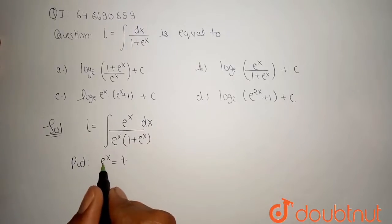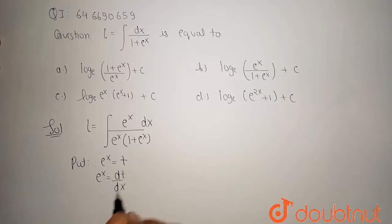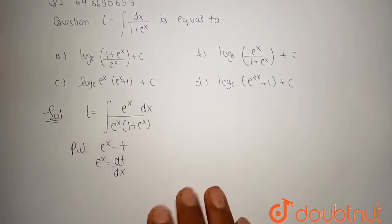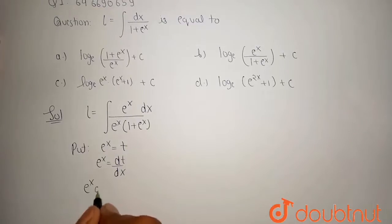We know that d by dx of e to the power x is e to the power x, and dt by dx remains the same. So this e to the power x into dx, I can shift this dx to the LHS side. So e to the power x dx is equal to dt.